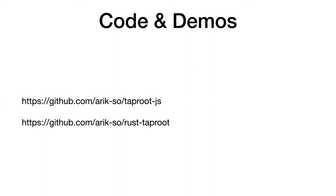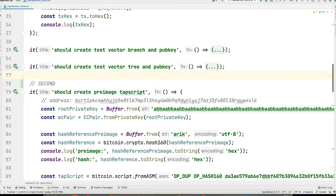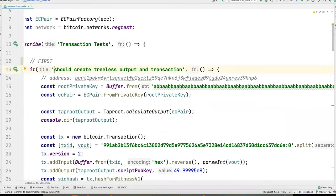I believe it's time for some demos. You can go over to my GitHub — I've just open sourced these two repositories. Due to some limitations of Bitcoin.js.lib, I had to create some code myself, but in Rust Bitcoin everything is available. I want to do demos where I first do a key path spend in Bitcoin.js.lib, then the same key path spend in Rust Bitcoin, then some script path spending using a hash pre-image revelation script.